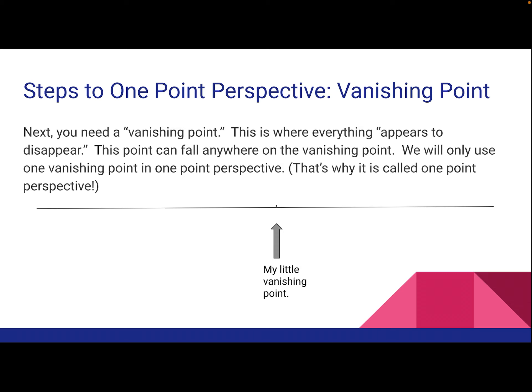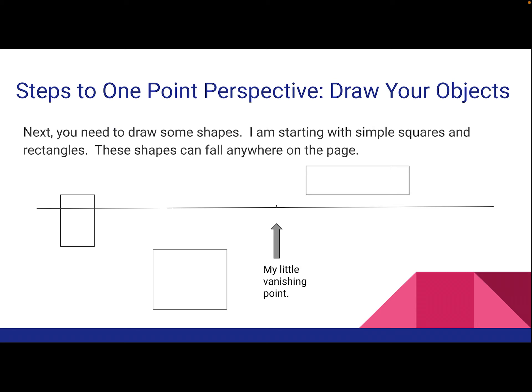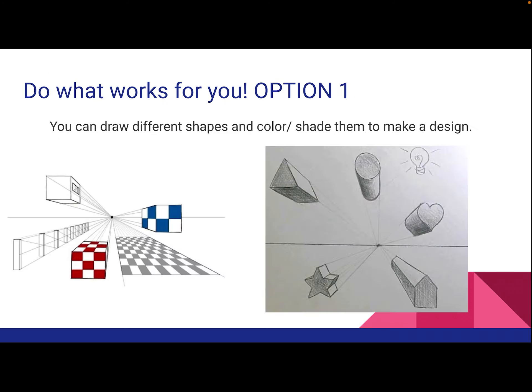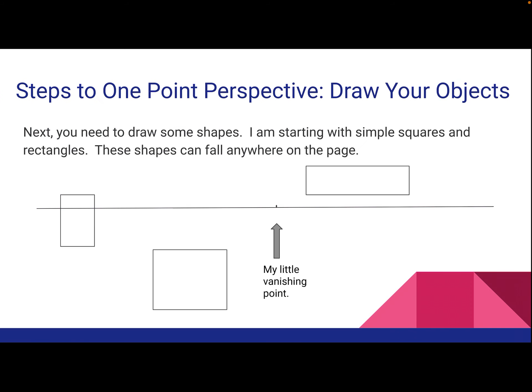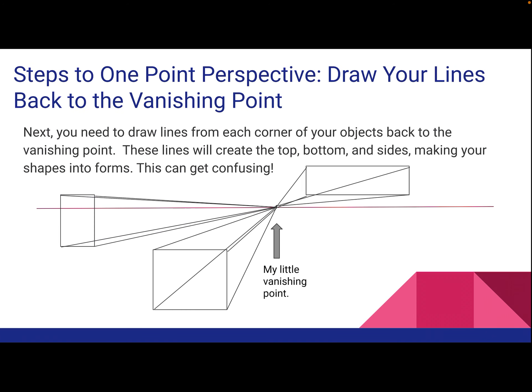You also need a vanishing point, which typically goes in the center — though you could put it off to the side a little bit. This is where everything appears to disappear, which is why we call it the vanishing point. We will only have one vanishing point for this project — that's why it's called one-point perspective. As you grow, you can add more vanishing points, but just one for us. We'll be drawing shapes: rectangles, squares, rounded shapes, circles, ovals, hearts, stars, and even bubble letters around your vanishing point.